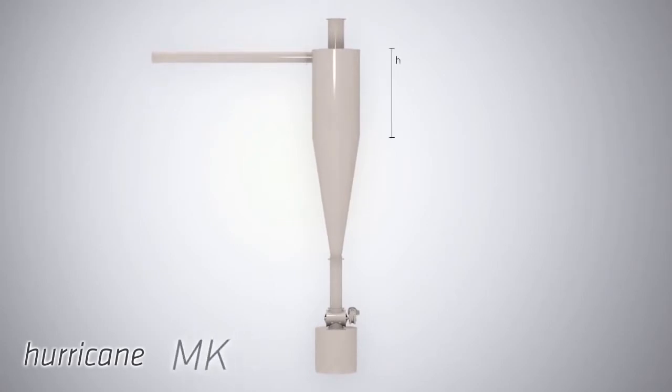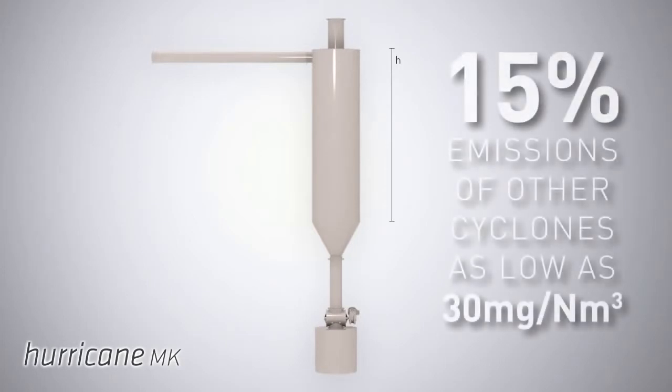Agglomeration is maximized with the new developed Hurricane Mk cyclones. Emissions can be under 15% of those of other cyclones, being as low as 30 milligrams per normal cubic meter for many industrial processes.